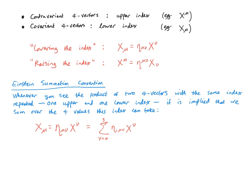This is the minus plus plus plus signature, referring to the diagonal elements of the metric tensor. We could also choose plus minus minus minus, which is just an overall sign flip and doesn't really make a physical difference — but we must have a convention and stick to it. Because eta is a diagonal matrix, raising or lowering an index really just amounts to flipping the sign on the time-like component.